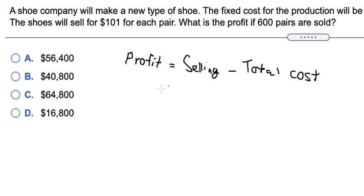For selling, we have $101 multiplied by 600.